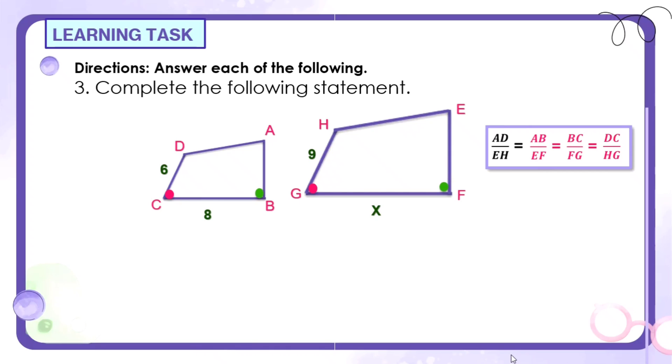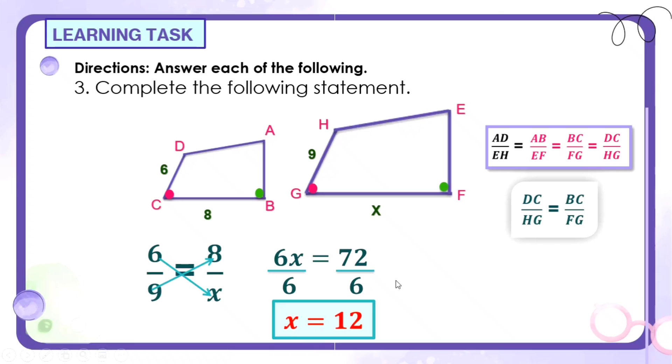Now, how about if you are asked to find the value of X? Remember, yung segment DC over segment HG is equal to segment BC over FG. Yun yung gagawin natin yung basis para makuha natin yung X. Substitute lang natin. Yung DC over HG, ito yun, DC is 6, and then HG is 9, is equal to BC, segment BC over segment FG. Yung FG natin is X, and then yung segment BC natin is 8. Para makuha mo yung X, cross-multiply lang tayo. 6 times X is 6X, then 9 times 8 is 72. And we need to divide both sides to 6 para makancel yung 6 at maiwan yung X. 72 divided by 6, the answer is 12. Therefore, our X here is 12.